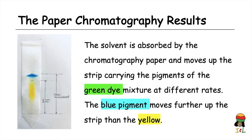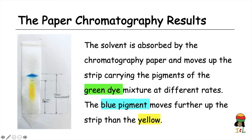For the paper chromatography results, we observed that the solvent was absorbed by the chromatography paper and moved up the strip, carrying with it the pigments of the green dye at different rates. The blue pigment or solute moved further up the strip than the yellow. In fact, the blue solute moved with the solvent — as you can see here, it is in line with the solvent front. The measured distances moved by the solvent and the blue solute was 7.5 centimeters from the baseline, while the distance moved by the yellow solute was 4.7 centimeters from the baseline.